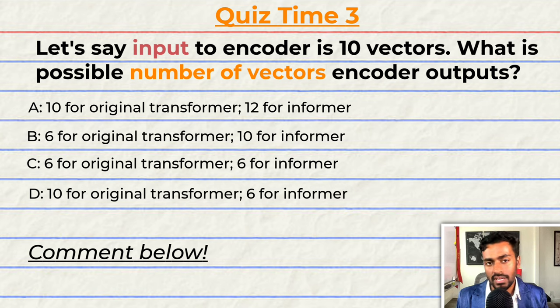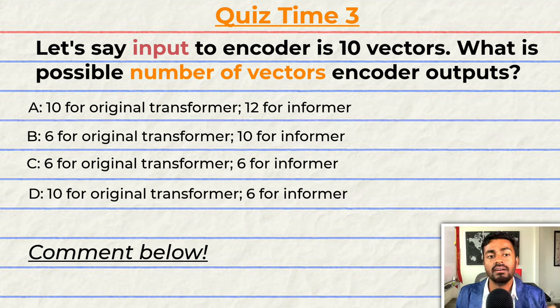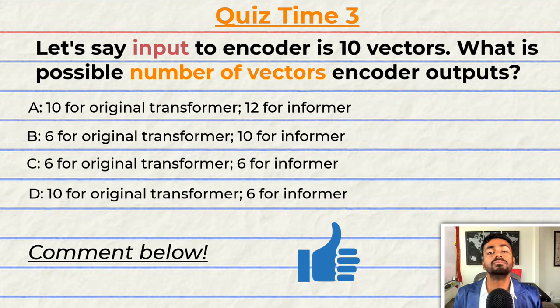Quiz time — this is going to be a fun one. If the input to the encoder is 10 vectors, what is the possible number of vectors the encoder outputs? A: 10 for the original Transformer and 12 for the Informer. B: 6 for the original Transformer and 10 for the Informer. C: 6 for the original Transformer and 6 for the Informer. Or D: 10 for the original Transformer and 6 for the Informer. Comment your answer down below. And if you think I deserve it, please consider giving this video a like. That's it for quiz three and pass three.